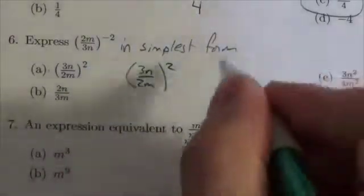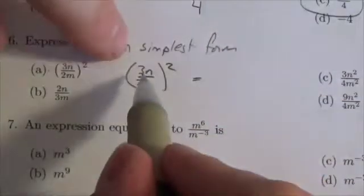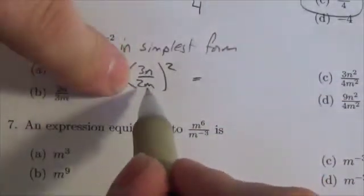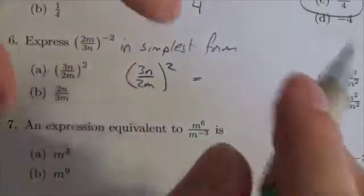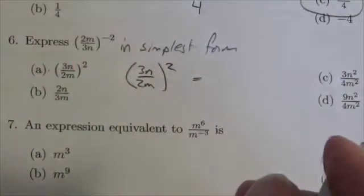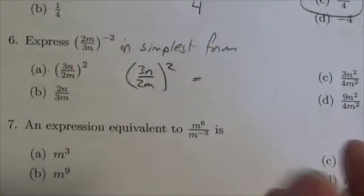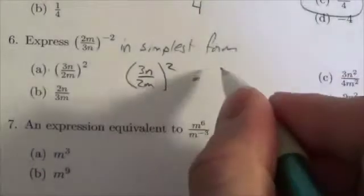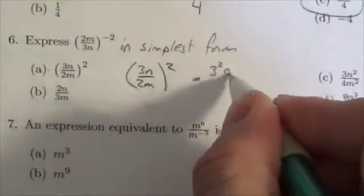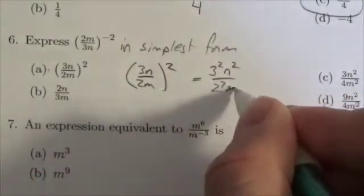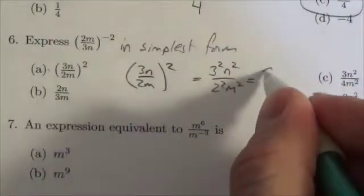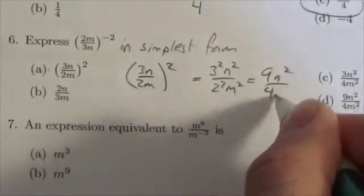Then I take into account the 2, and because things are multiplied and divided here, because everything is being multiplied divided, there's no addition here, because addition would cause this to behave differently, this is simply going to be 3 squared n squared over 2 squared m squared, or in other words, 9n squared over 4m squared.